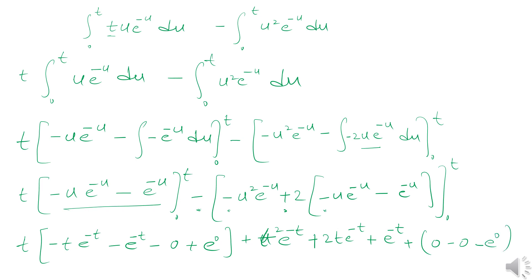Now we simplify. The t multiplied by t e to the power negative t cancels with the negative sign. We are left with negative t e to the power negative t plus 2t e to the power negative t, giving t e to the power negative t.